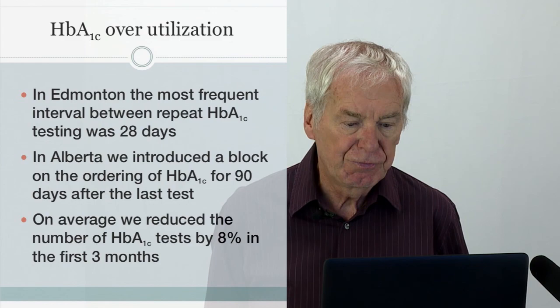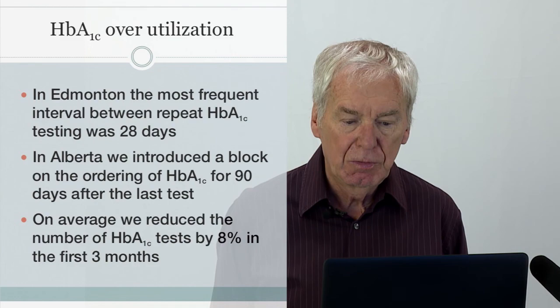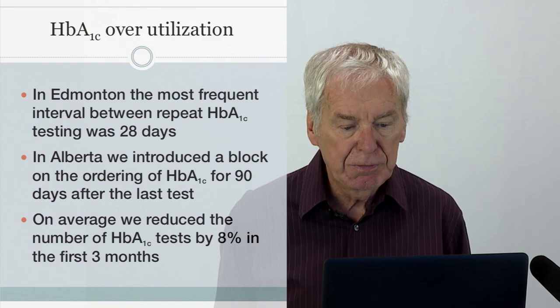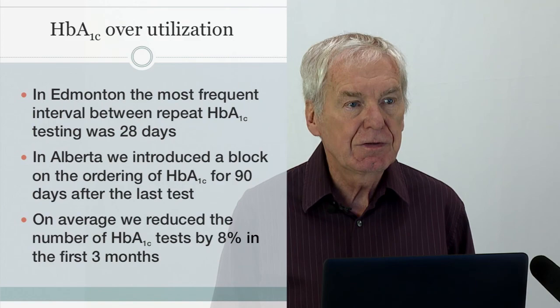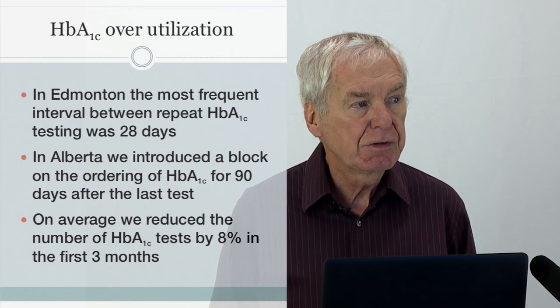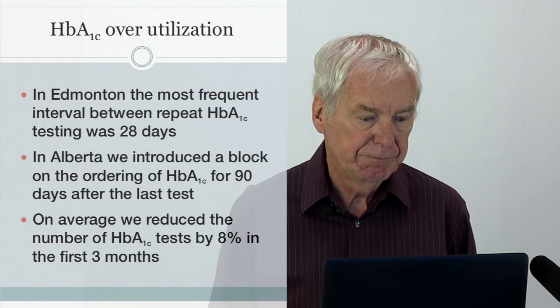A1c can be over-utilized like all tests. In Edmonton, we found the most frequent testing interval between repeat A1c tests was 28 days. So we introduced a rule blocking all A1c orders at less than 90 days, which reduced the number of A1c tests by 8% in the first 12 months and 12% over the next six months. We chose 90 days because of strong evidence that this is the optimal frequency for A1c testing to ensure the best results.